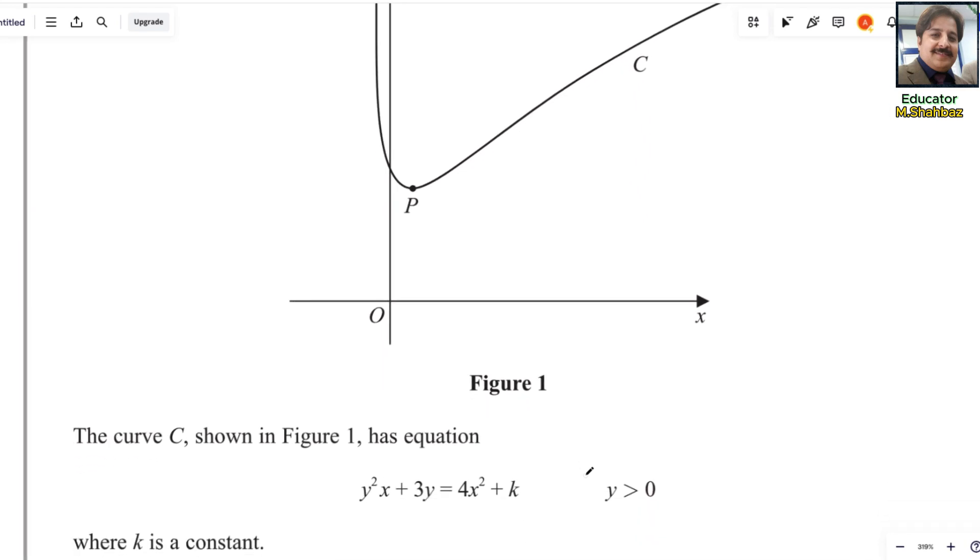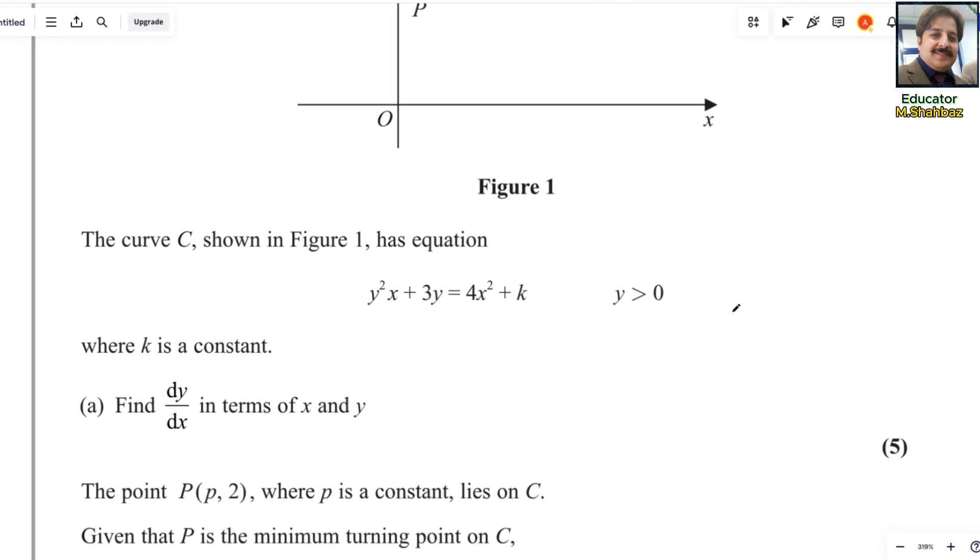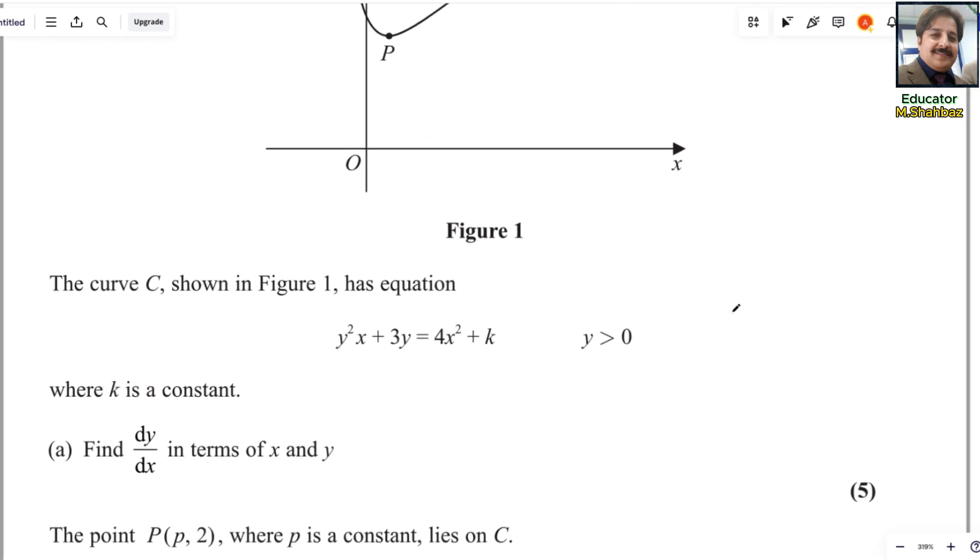The graph is given here. The curve C shown in figure 1 has equation y²x + 3y = 4x² + k, and y is greater than 0, where k is a constant. Find dy/dx in terms of x and y. First part is very easy, simple derivative.